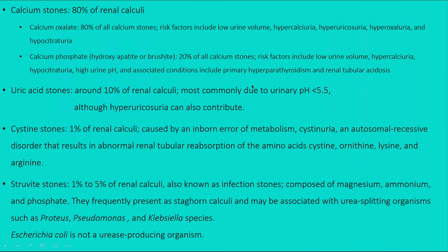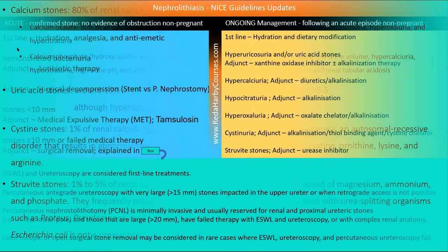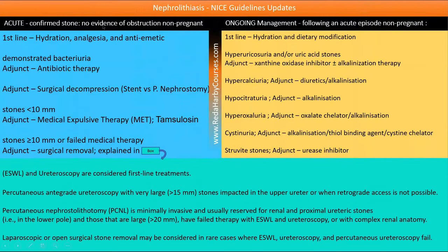According to NICE guidelines, for acute confirmed renal stone with no evidence of obstruction in a non-pregnant patient, the first line is hydration, analgesia, and antiemetics. If nitrite-positive or leukocytes are found in urine, indicating associated bacteriuria, start antibiotic therapy: nitrofurantoin or trimethoprim.